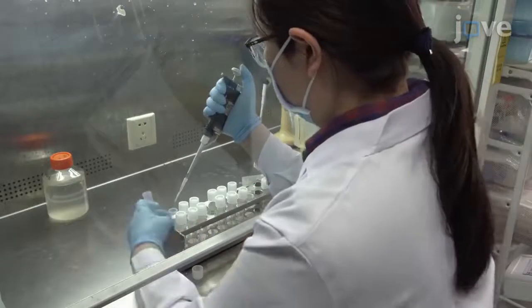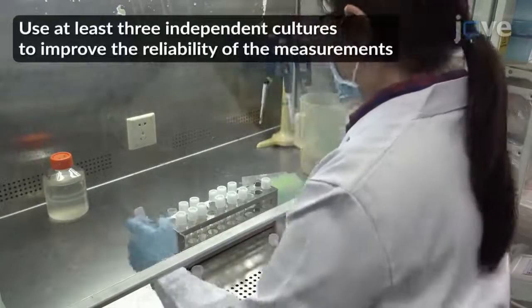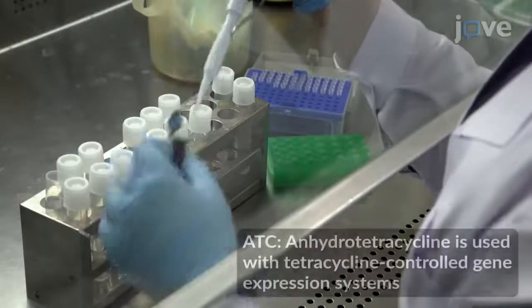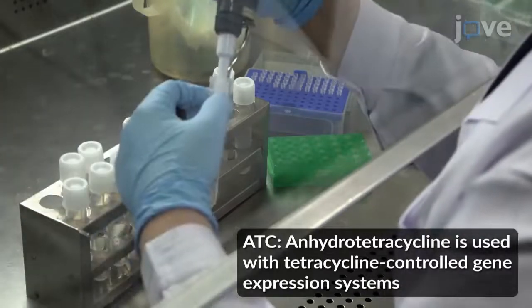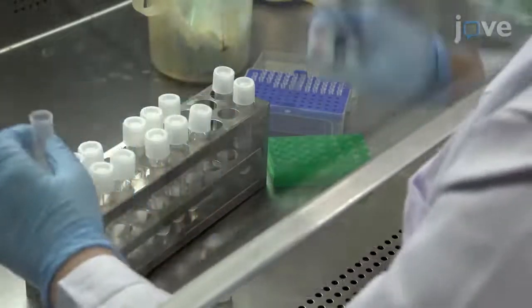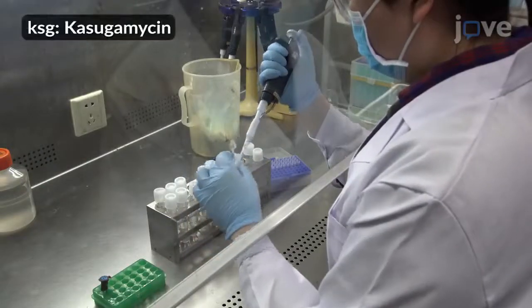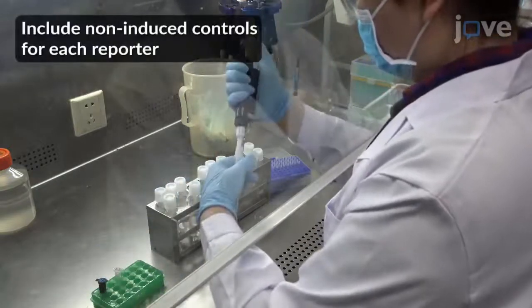Aliquot and dilute to obtain an OD at 600 nm around 0.5 to 1. Then, add ATC to a final concentration of 50 ng per milliliter. Immediately add different doses of KSG to the culture, according to the manuscript, to measure its effects on mistranslation rates.